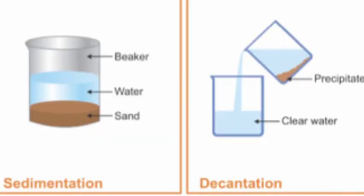What is sedimentation? Sedimentation is the method used to remove heavier insoluble impurities from water. Take a glass of water and put some mud in it and stir well. Keep it aside without disturbing for some time. You can see the insoluble mud particles settle down at the bottom of the glass, and clear water can be seen on the top. The mud that settles down is known as sediment. This method is called sedimentation. Now carefully pour out the clear water into another glass; the sediment is left behind. This process is known as decantation.